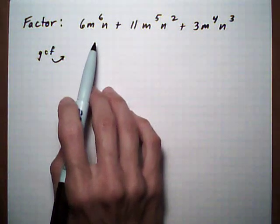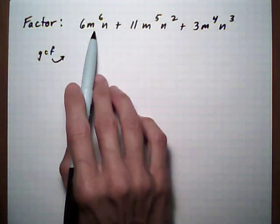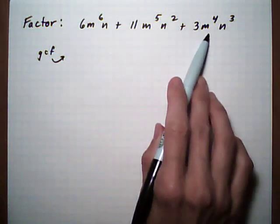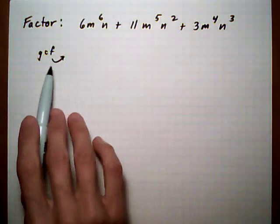All right, factor this messy trinomial. This one has a few things going on. It's got greatest common factors that we can pull out and it also has two variables. So let's take a look at how I deal with it.